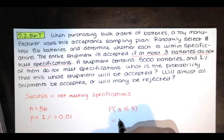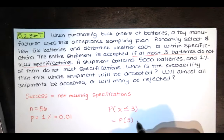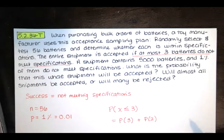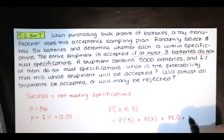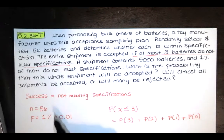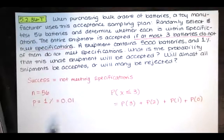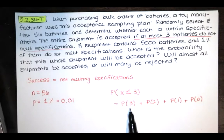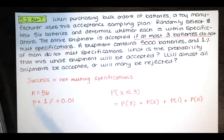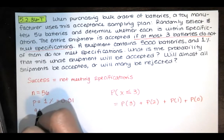That means we might have three batteries that don't meet specifications, or two batteries that don't meet specifications, or one battery that does not meet specifications, or zero batteries — if we're really lucky — that do not meet specifications out of the 56. So we're going to compute binomial probabilities for x equals 3, 2, 1, and 0, and we'll just add those together. The probability of not meeting specifications in one trial is 1% or 0.01.